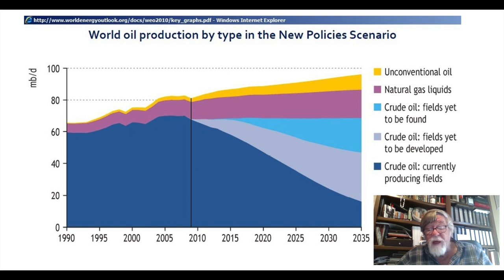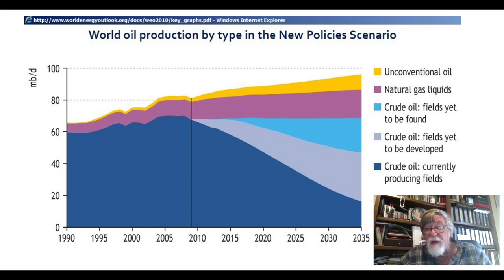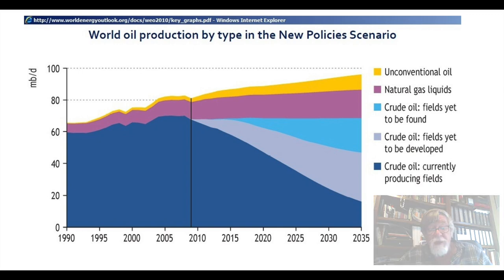There's a wedge of crude oil from fields yet to be developed but already found, which adds a longer period of production plateau and even some growth — but then it declines as well. Then there's the crude oil from fields yet to be found. Low oil prices tend to put a halt to exploration plans, and if we do that for too long, we'll be missing that important production wedge. Natural gas liquids and the growth of unconventional shale oil altogether add to the global supply picture.